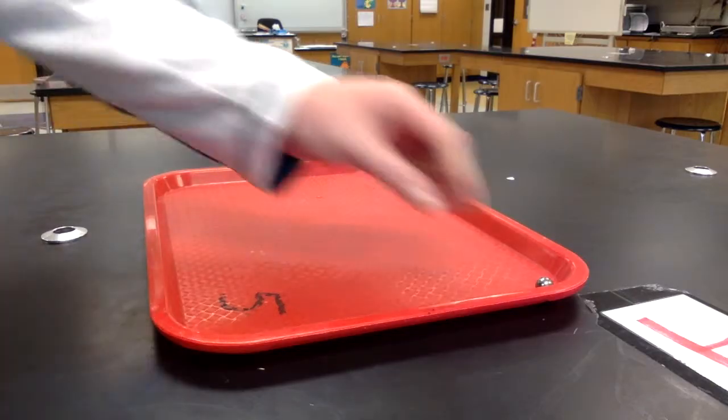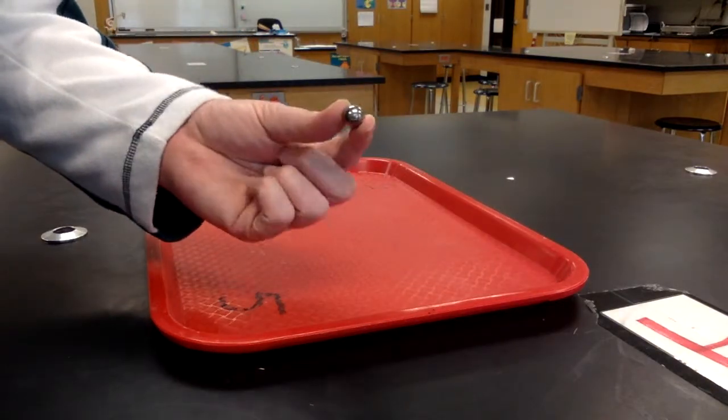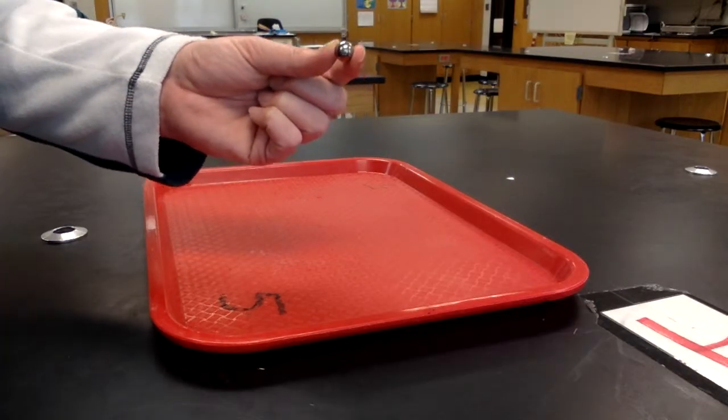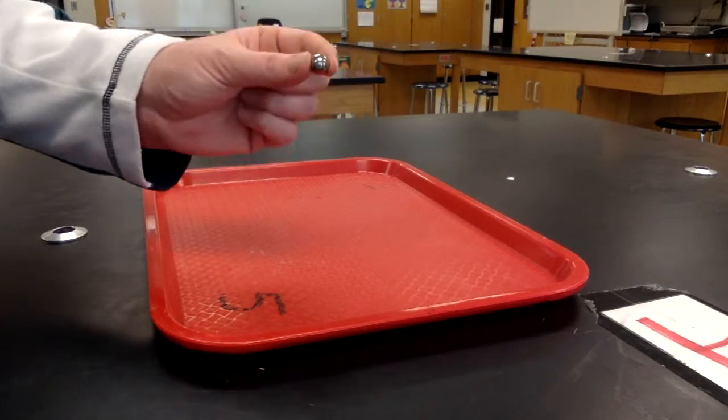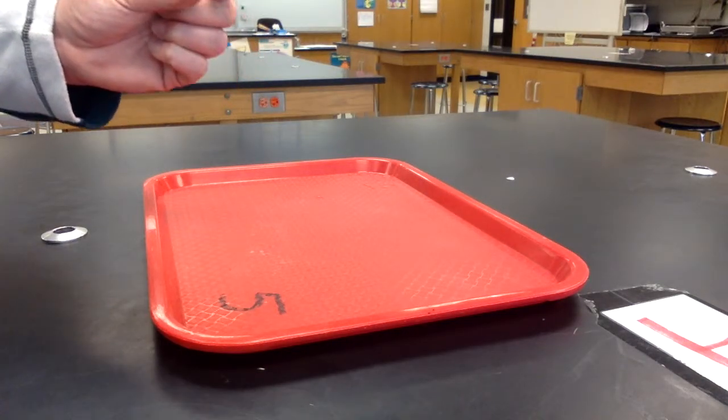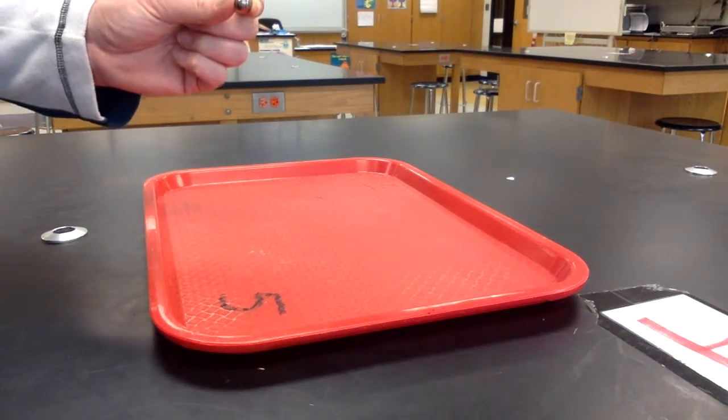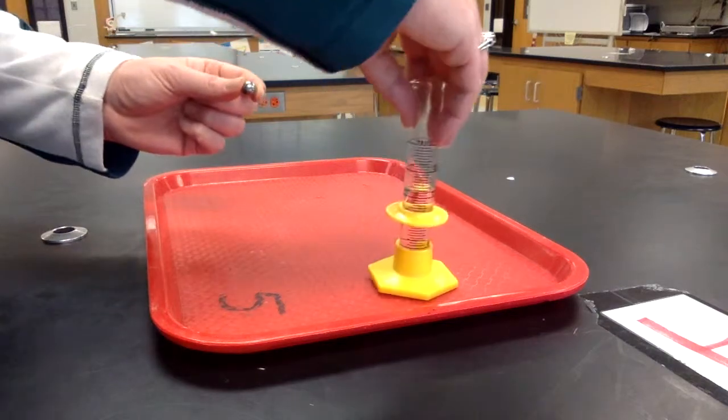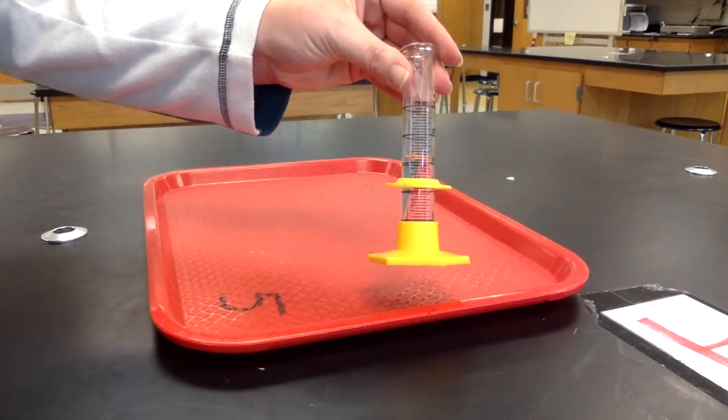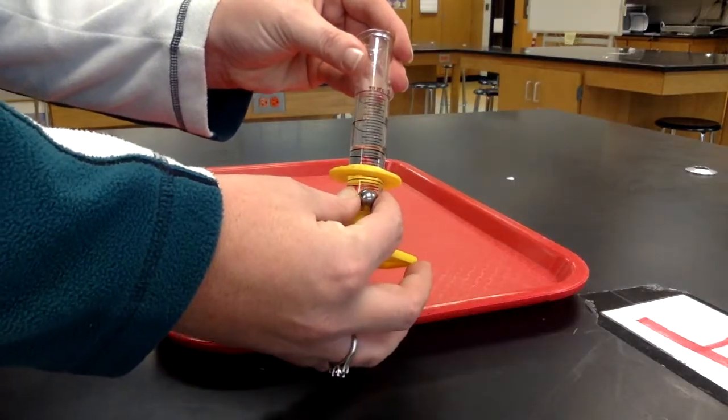To measure the volume of an irregularly shaped object such as a round object or something that does not have the shape of a cube, a square, or a rectangle, I would first take a graduated cylinder. I need to make sure there is enough water in the graduated cylinder to cover the object, which there is.